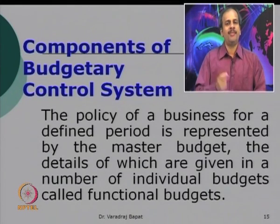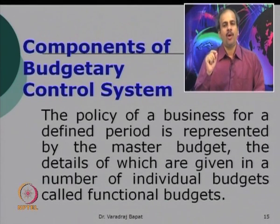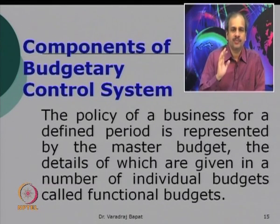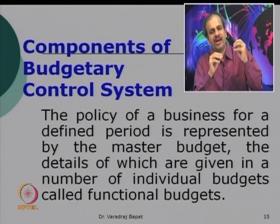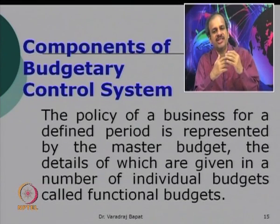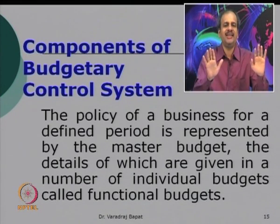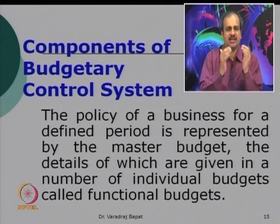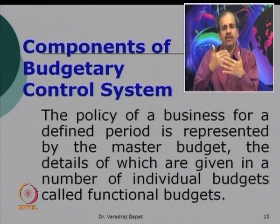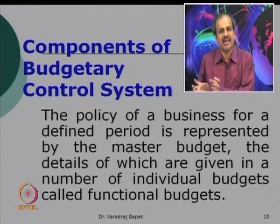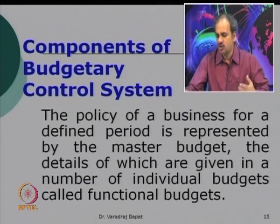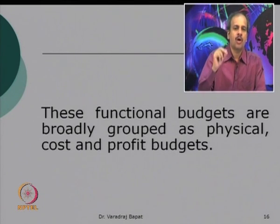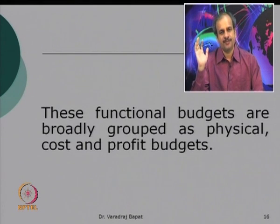Now let us look at the components of a budgetary control system. The policy of a business for a defined period of time is represented by the master budget. The master budget is a key component and starting point for the budgetary control system — it gives an overall idea of what should be done, and the details are in the individual budgets. It is a circular process: from the master budget, allocations are made to individual or functional budgets, and from the feedback of functional budgets, the master budget may be reshaped. Functional budgets can be grouped into physical, cost, and profit budgets.